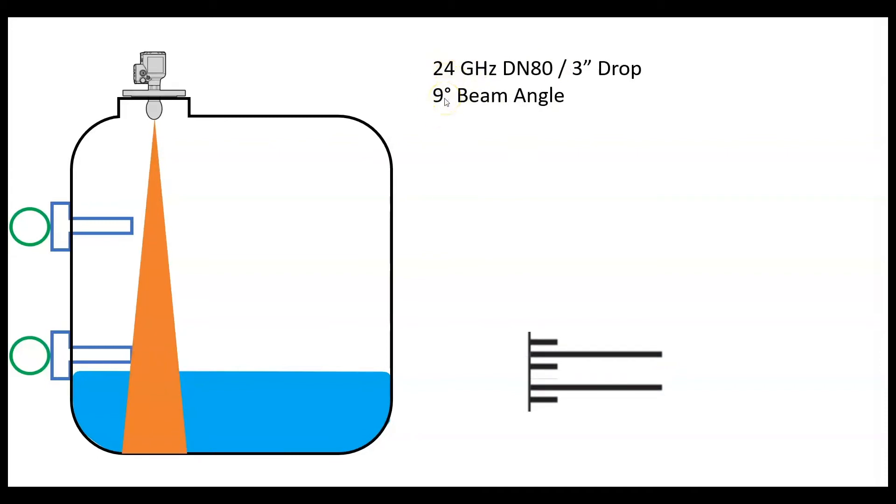You've got a 3-inch drop antenna on this one, a 9-degree beam angle. And the same size tank, same dimensions - it's going to miss the thermal well completely, doesn't touch it. Same thing here at the bottom. This is just an example, but it's going to say I see a level here, there's a thermal well.